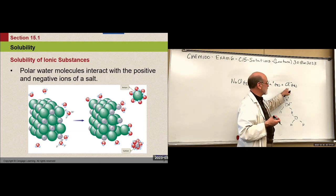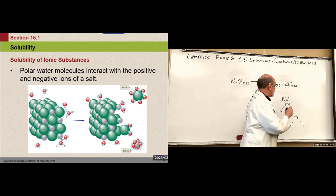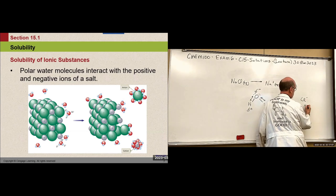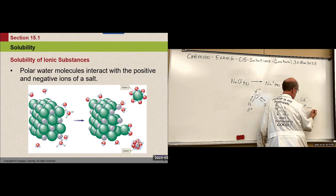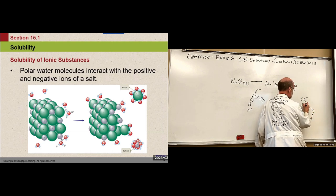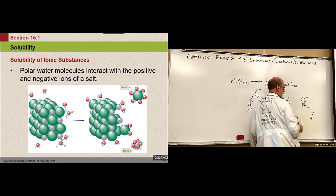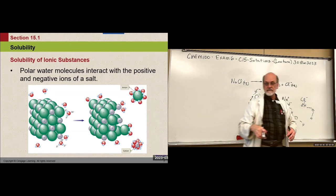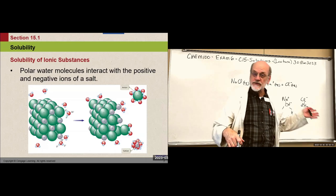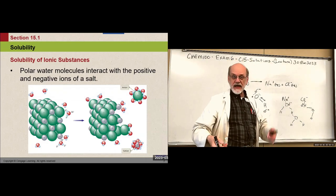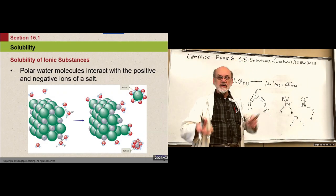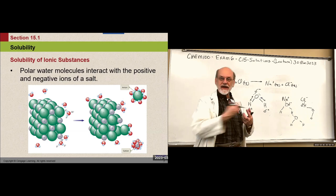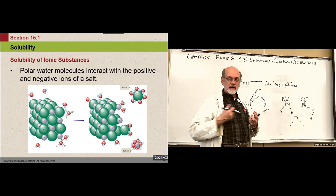The same thing happens with chlorine, only the other side of the water molecule — the positive end — associates with the chloride. The water molecules pull it out of the crystal, and they just keep doing that. Fresh surface is exposed each time you pull an ion away, and they keep going until it's all dissolved.